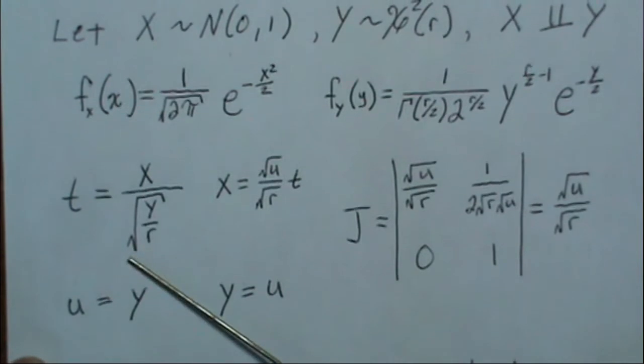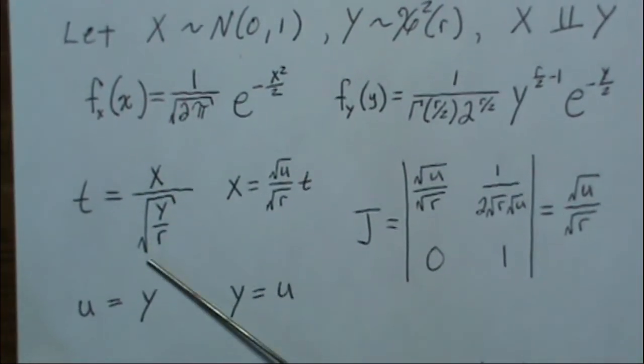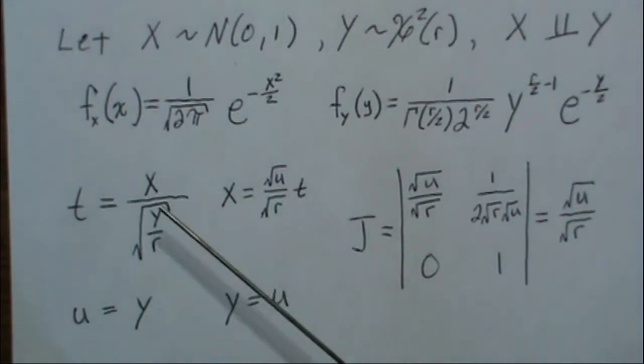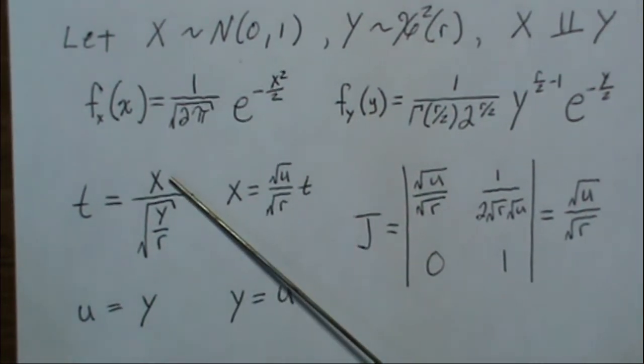Now, we want to find this distribution right here, which is the square root of a chi-squared over r in the denominator, and the numerator is a standard normal distribution.